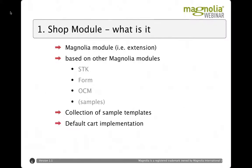The shop module is a regular Magnolia module — a Magnolia CMS extension. It is based on other Magnolia modules and Magnolia standards. We make heavy use of the standard templating kit and the forum module. We use the OCM module for storing the carts and the sample module for quick setup of a sample shop. What you get is a collection of sample templates and a default cart implementation, which I'll show you how to extend.